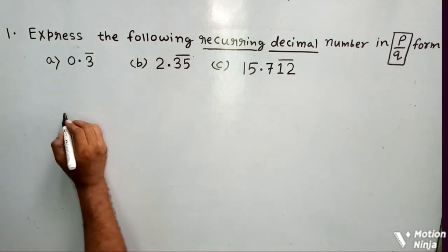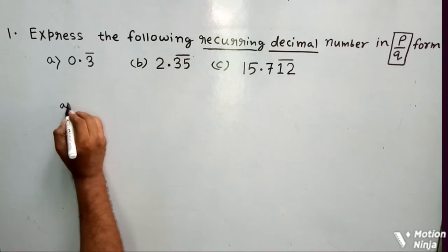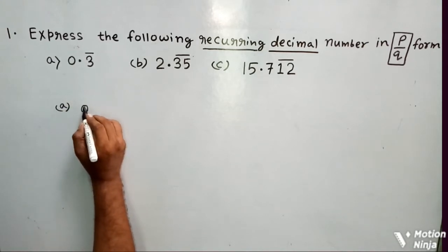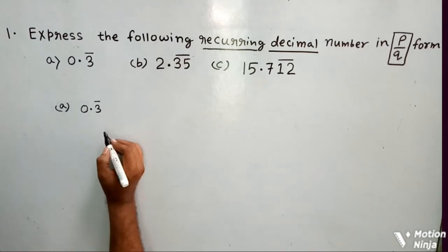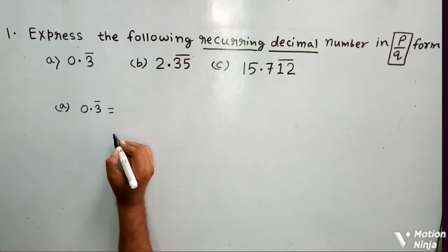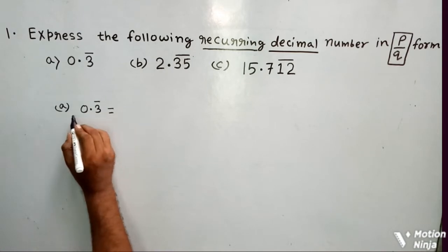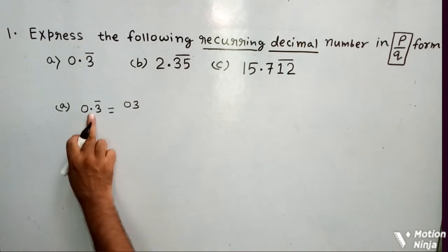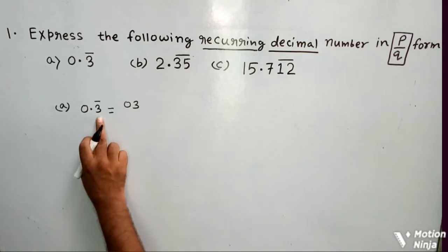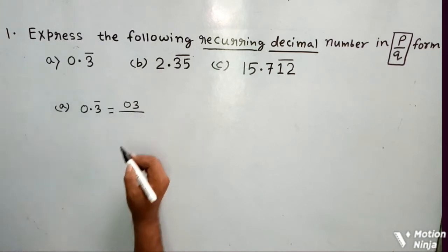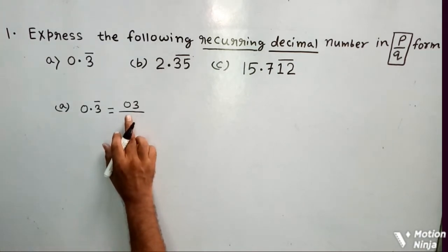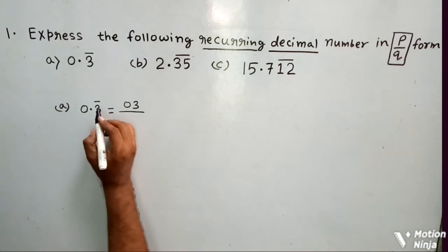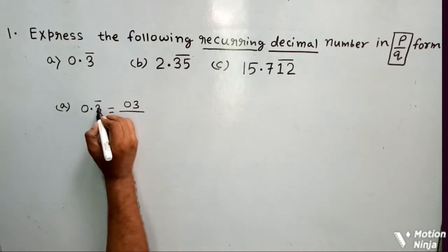Now if I consider question number a, it is given 0.3 bar. Now the trick is that whatever number is given, you write down 0.3. Excluding the decimal, you write whatever number is given and then underline it. In the denominator part, you will see on how many digits there is a bar. On a single digit there is a bar, so you will write here one 9.